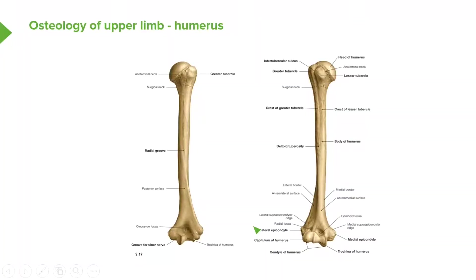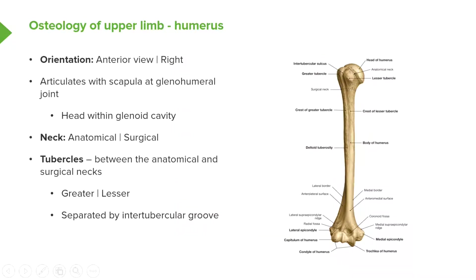Here we can see both an anterior and a posterior view on the slide. This is the anterior view of a right humerus. Here we have the head of the humerus that will be articulating with the glenoid cavity, so the scapula would be positioned here. This is the lateral aspect of the humerus, and we can see down here we have a structure called the lateral epicondyle.